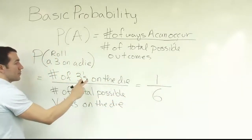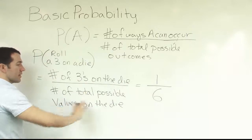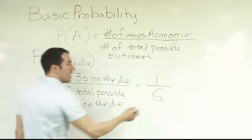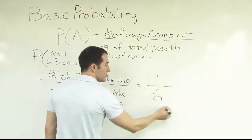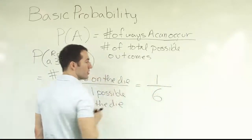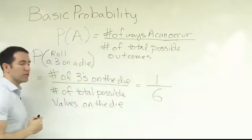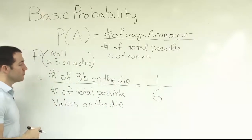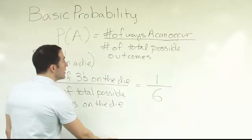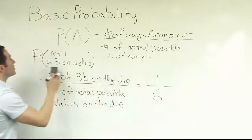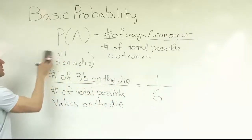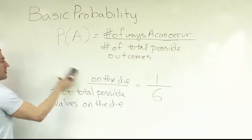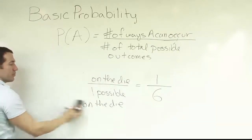It just becomes a counting problem at that point. You have to count how many threes on the die and count how many total possible outcomes. Then you can leave it as a fraction or convert it into a decimal or percent. Let's just leave that as a fraction. That's the classical approach.